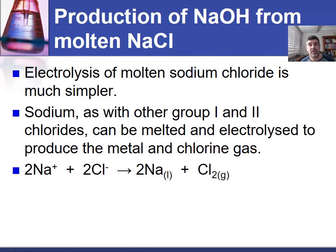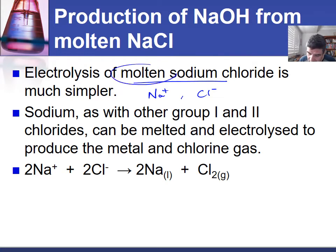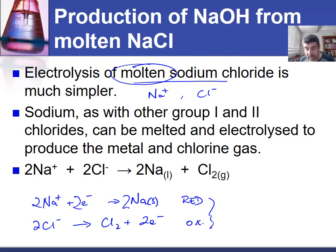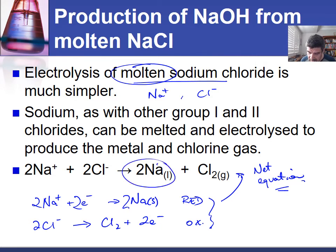Now it is also possible to produce sodium hydroxide from molten sodium chloride. The difference is that when we use molten sodium chloride the only species available are sodium ions and chloride ions. As a consequence, when we electrolyze molten sodium chloride we reduce the sodium into sodium metal and oxidize the chloride into chlorine gas. We balance those up to get the net equation, and then to form sodium hydroxide we would have to react the sodium metal with water to form hydrogen gas and sodium hydroxide.